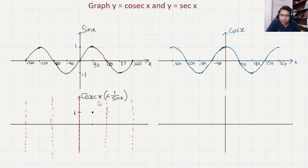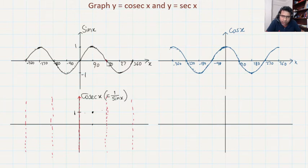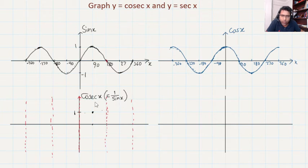Now what happens beyond 90 degrees? On the right side of 90 degrees, the sine graph is going down toward 0. As sine X decreases, the denominator is getting smaller, so cosec X goes up — it increases. So when sine X is decreasing, cosec X is increasing.